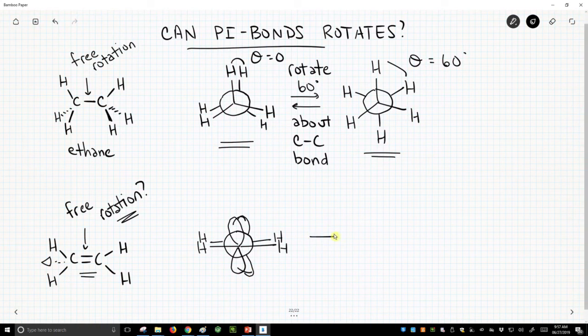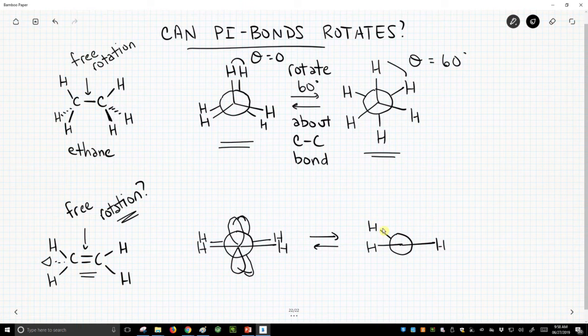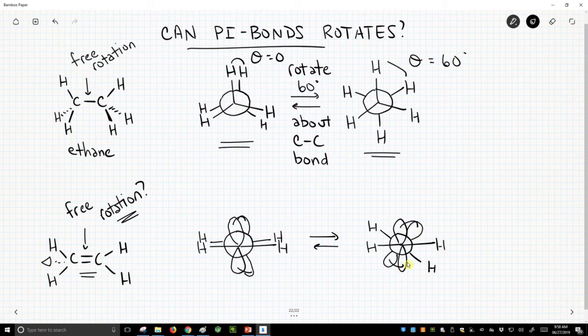Well, we cannot rotate about this bond because what would happen is, to rotate, let's turn the back carbon. If we try to do a rotation, that p orbital on the front carbon would stay the same, but the p orbital on the back carbon would turn, and we would break our overlap between our p orbitals. We cannot rotate. We don't have free rotation about pi bonds.